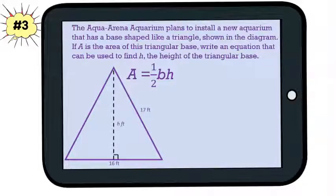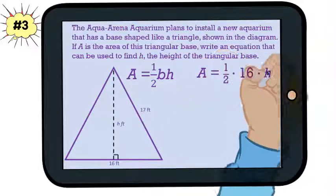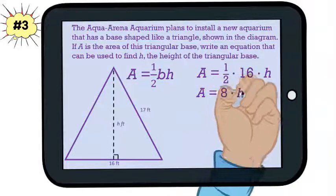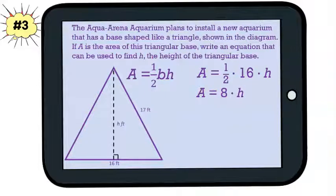First we need to substitute 16 in for the base, then simplify by multiplying 1/2 by 16. That gives us 8. Next we need to divide both sides by 8 and we get that H = A ÷ 8.